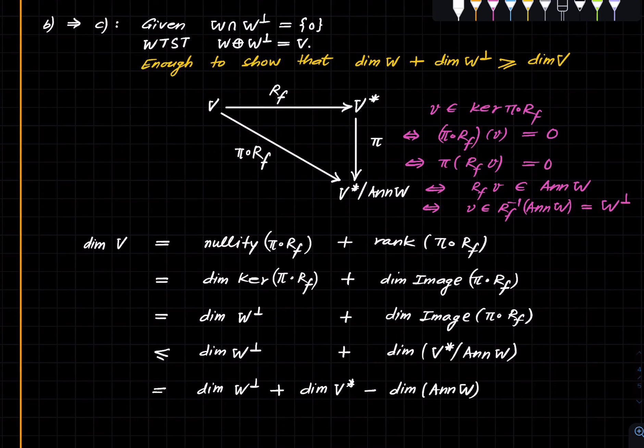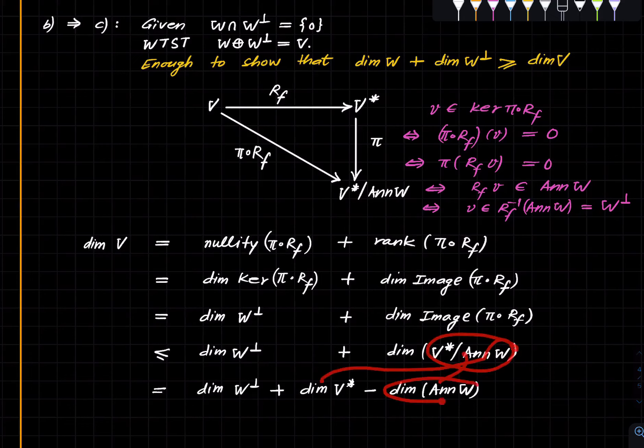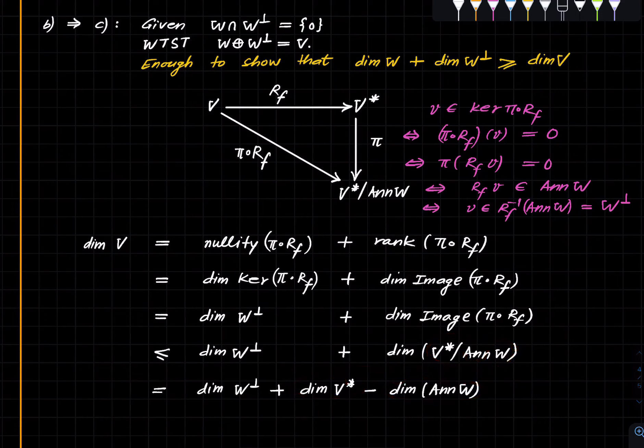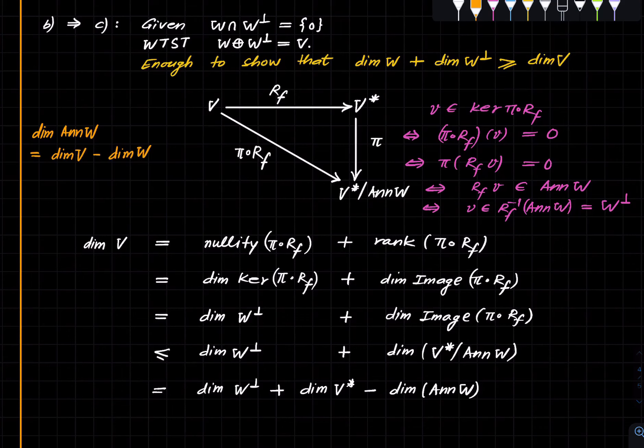This is now equal to dimension W perp plus dimension V star minus dimension of the annihilator. We're using the fact that dimension of the quotient space is the difference of the dimensions of the participating spaces. Recall that dimension of annihilator of W is dimension of V minus dimension of W.